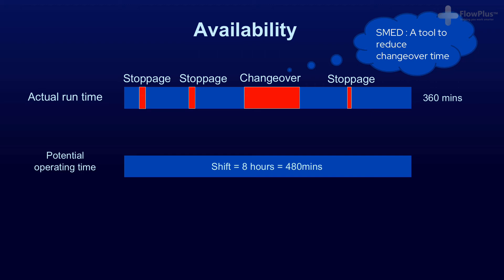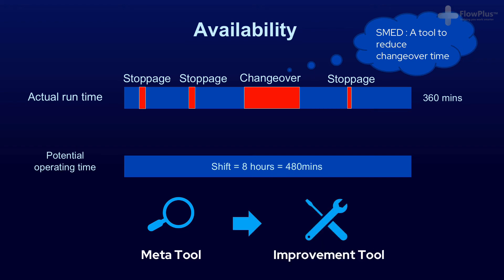This relationship between identifying problems and selecting tools will be repeated throughout the course. You first identify the problem using a meta tool like value stream mapping, or in this case OEE, to uncover the problem — in this case, long changeovers. You then select the improvement tool with its specific function, never the other way around.